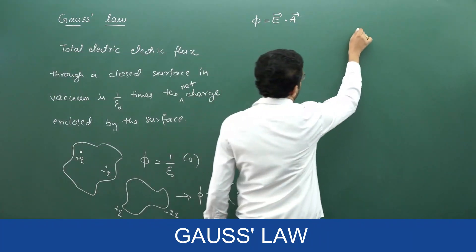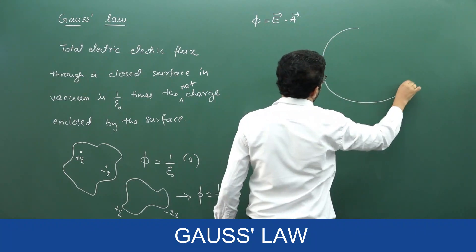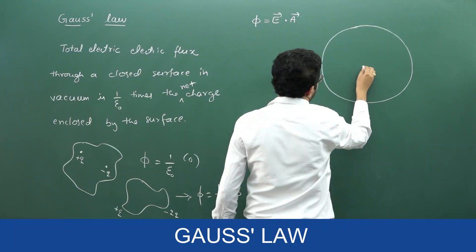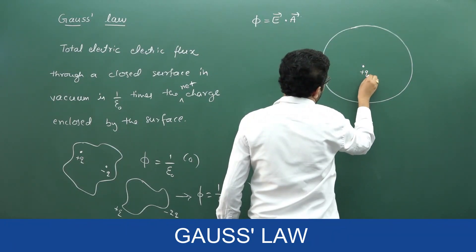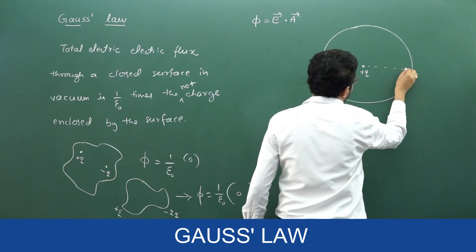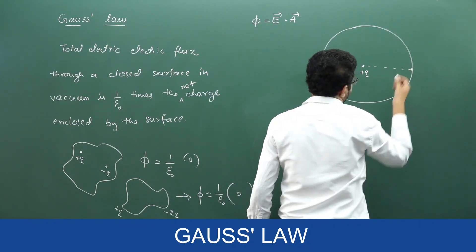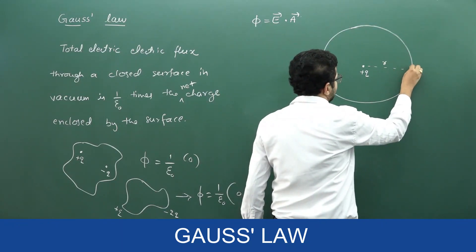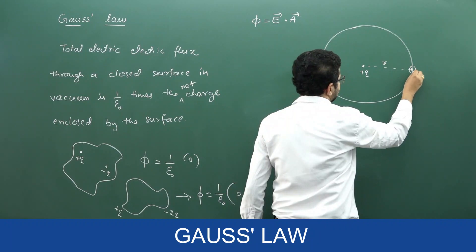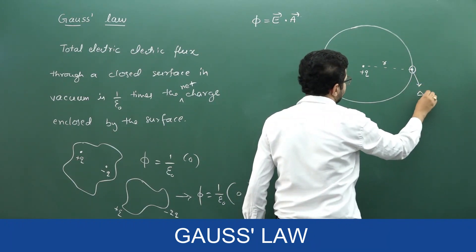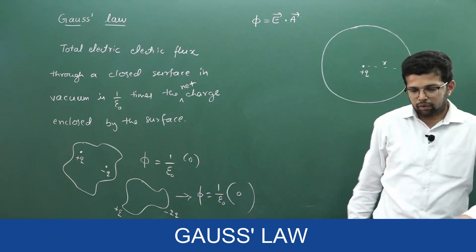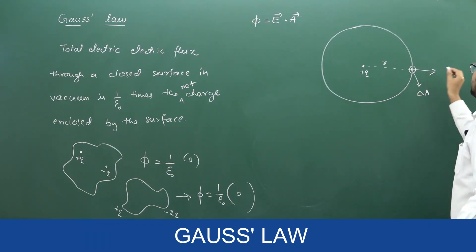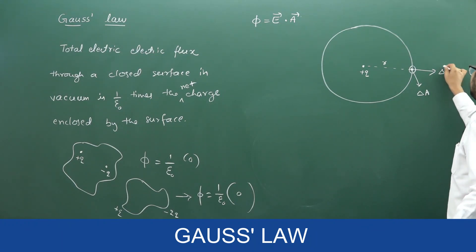Say there is a closed spherical surface. At the center of this spherical surface, say there is a charge plus q. This distance from the center is r. Let me consider one very small area on the surface — the magnitude of that area, let it be delta a. What is the direction of the area vector here? The area vector is always the outward normal.